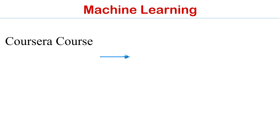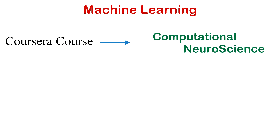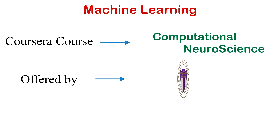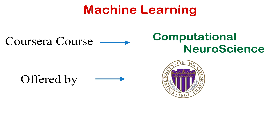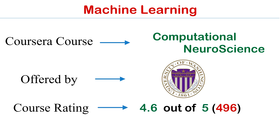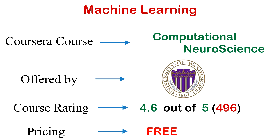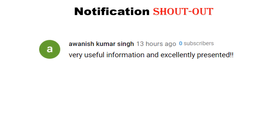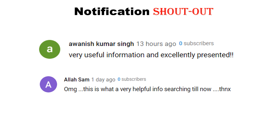Course number ten is Computational Neuroscience, offered by the University of Washington. The rating of this course is 4.6 out of 5 and the price of this course is absolutely free. And that's it for this session. Today's shoutout goes to Avanish Kumar Singh and Sam — thanks for commenting and supporting.